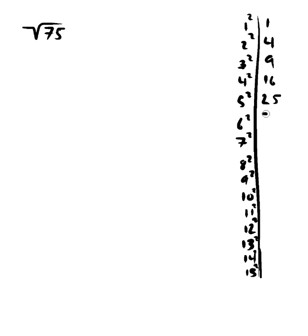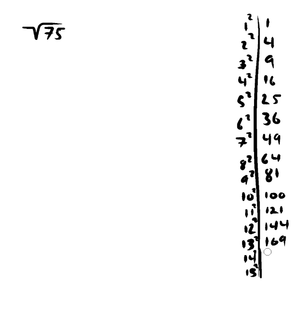So here are the perfect squares: 1 squared equals 1, 2 squared equals 4, 3 squared equals 9, 4 squared equals 16, 5 squared equals 25, 6 squared equals 36, 7 squared equals 49, 8 times 8 equals 64, 9 times 9 equals 81, 10 times 10 is 100, 11 times 11 is 121, 12 times 12 is 144, 13 times 13 is 169, 14 times 14 is 196, and 15 squared is 225.